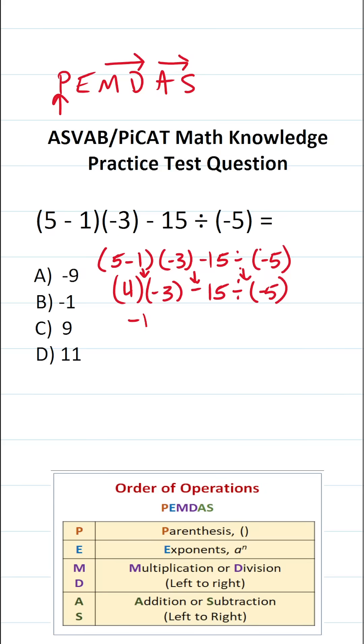4 times negative 3 is going to be negative 12. A positive times a negative is a negative. So this is negative 12 minus 15 divided by negative 5.